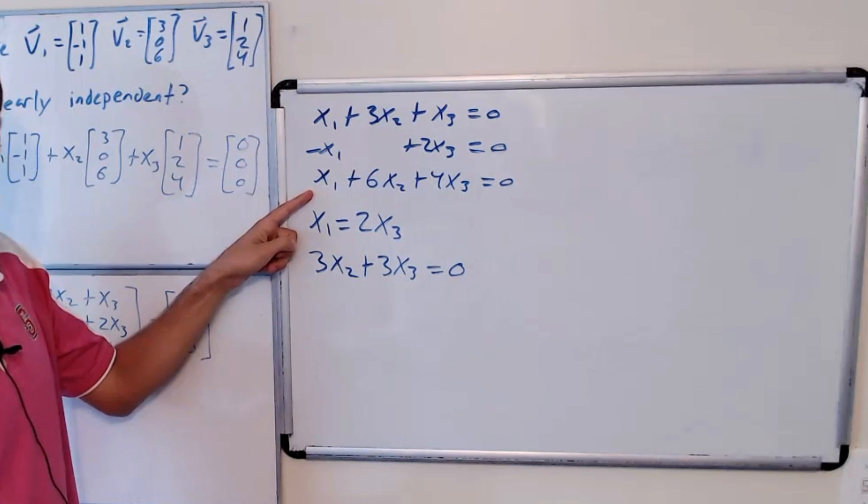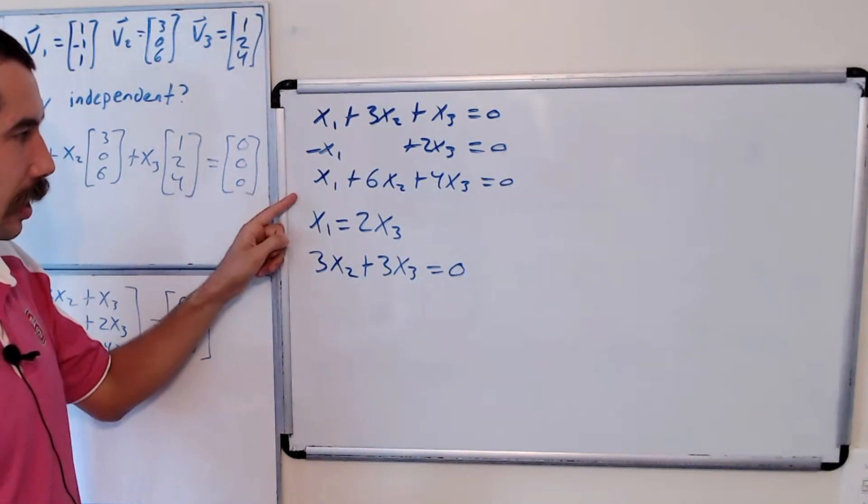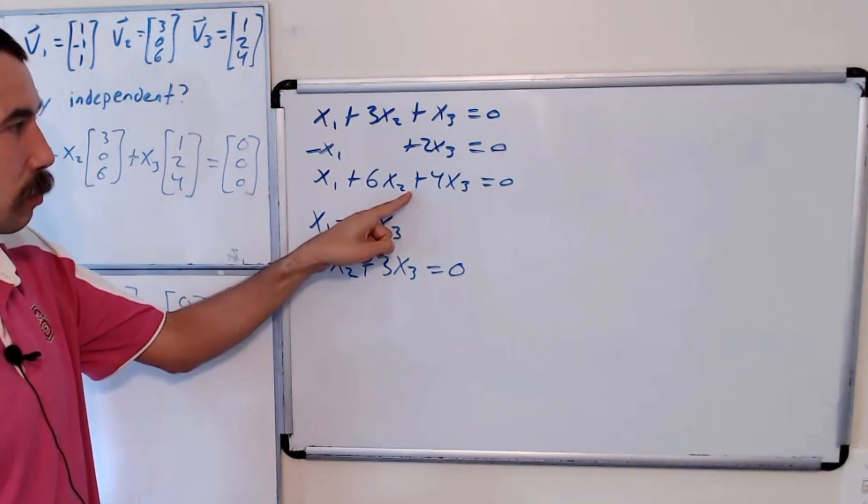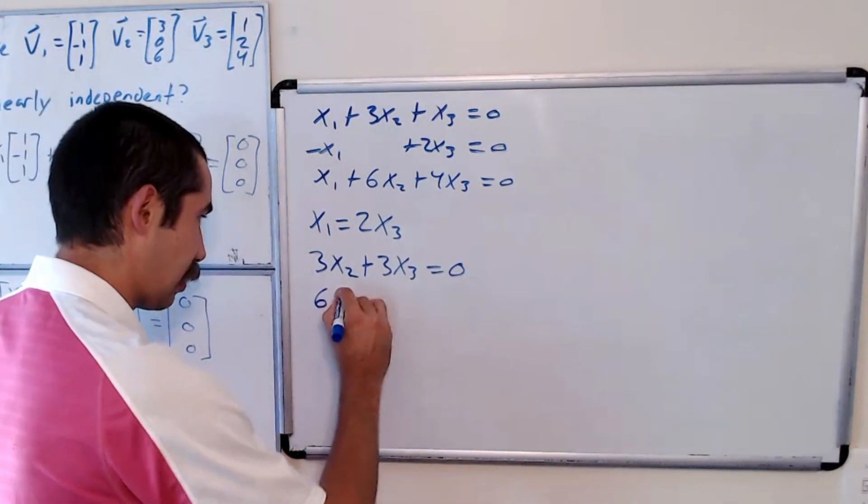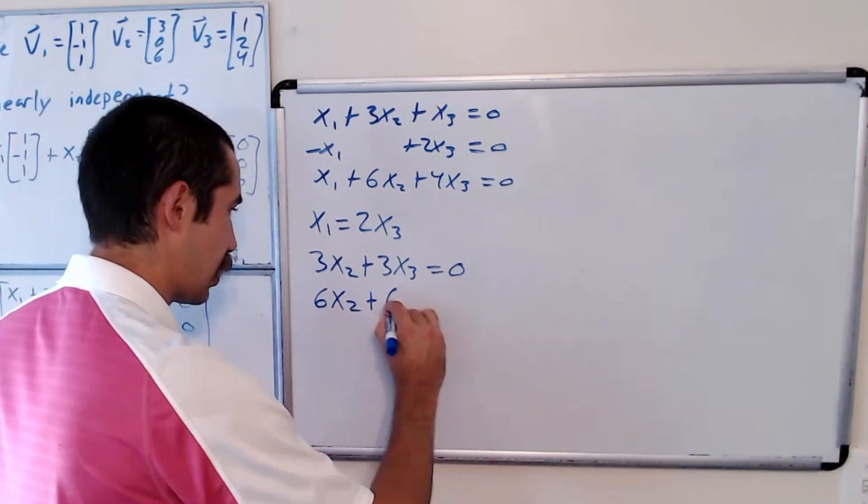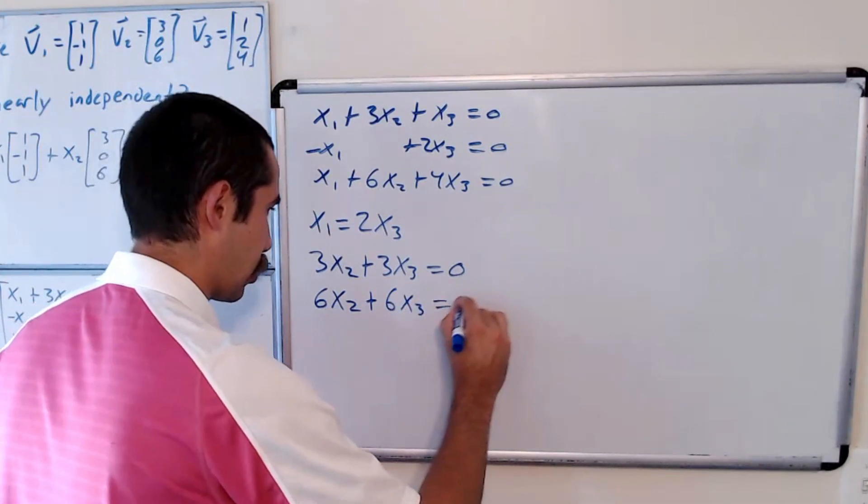Our new third equation will be 2x3 plus 6x2 plus 4x3 equals 0. That's 6x2 plus 6x3 equals 0.